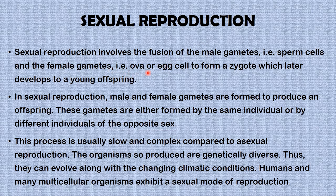Sexual reproduction involves the fusion of the male gametes — that is the sperm cell — and the female gametes — that is the egg cell — to form a zygote, which later develops into a young offspring. In sexual reproduction, male and female gametes are formed to produce an offspring.